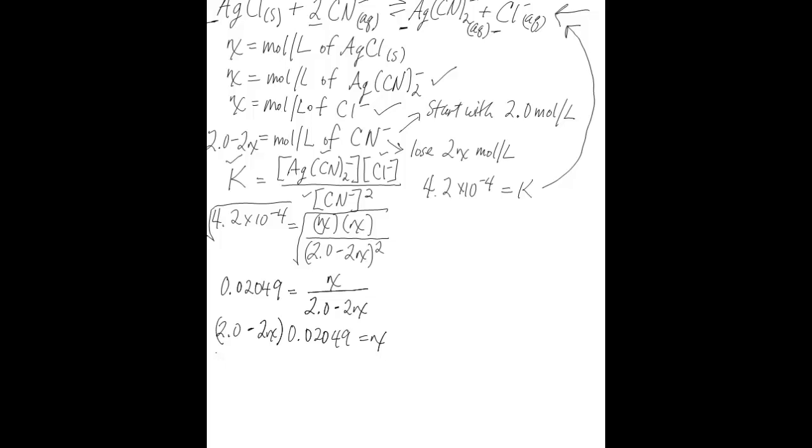Multiply out the parentheses, 0.04099 minus 0.04099X is equal to X. When you move X to the other side of the equation to get both X's on the same side, you're going to be left with 0.04099 is equal to 1.04099X because you're adding 1X plus 0.04099X. And then when you solve for X, you get a value of 0.03938.